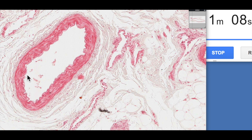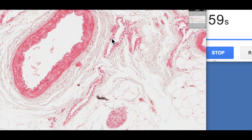You can see that waviness here. So this is our internal elastic lamina, we've got our smooth muscle in our tunica media and then we've got our adventitia.